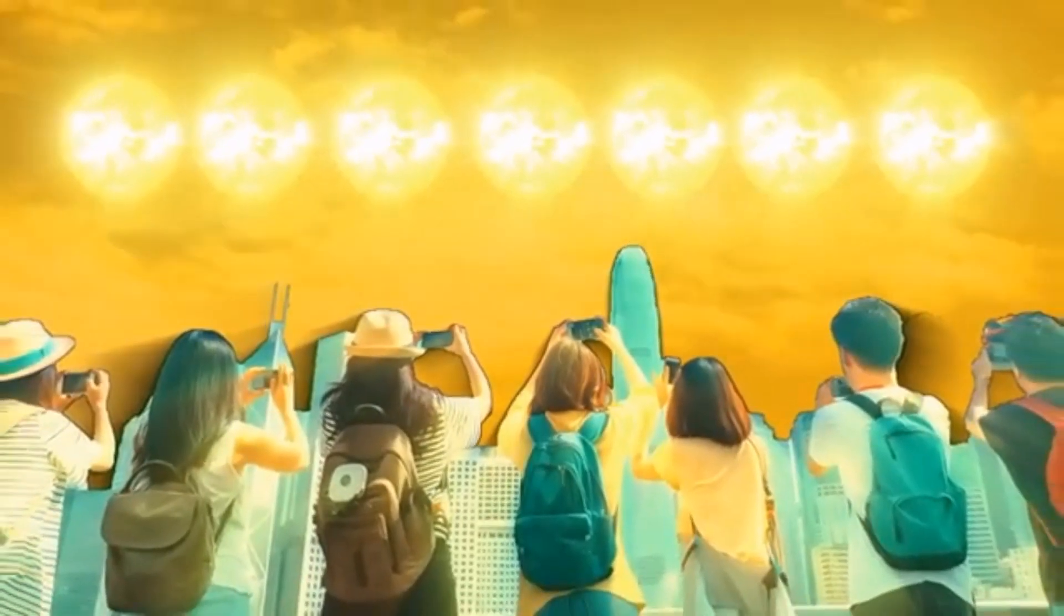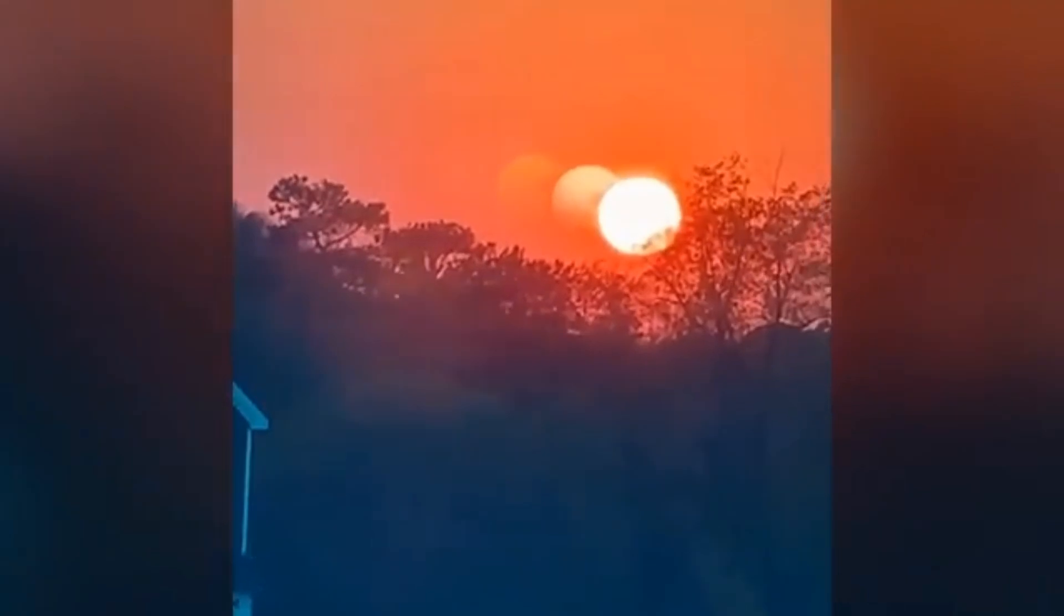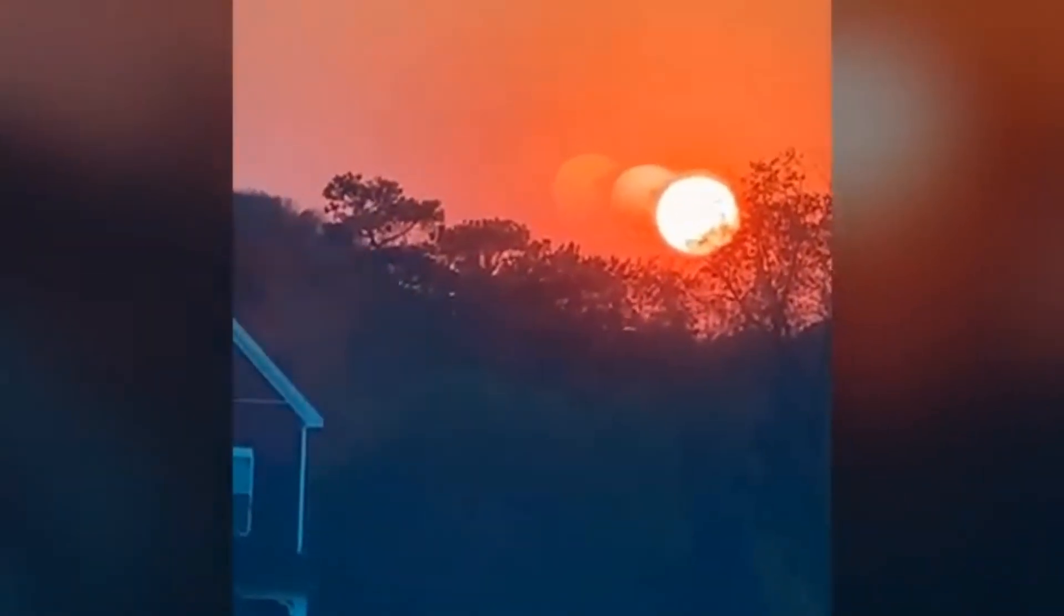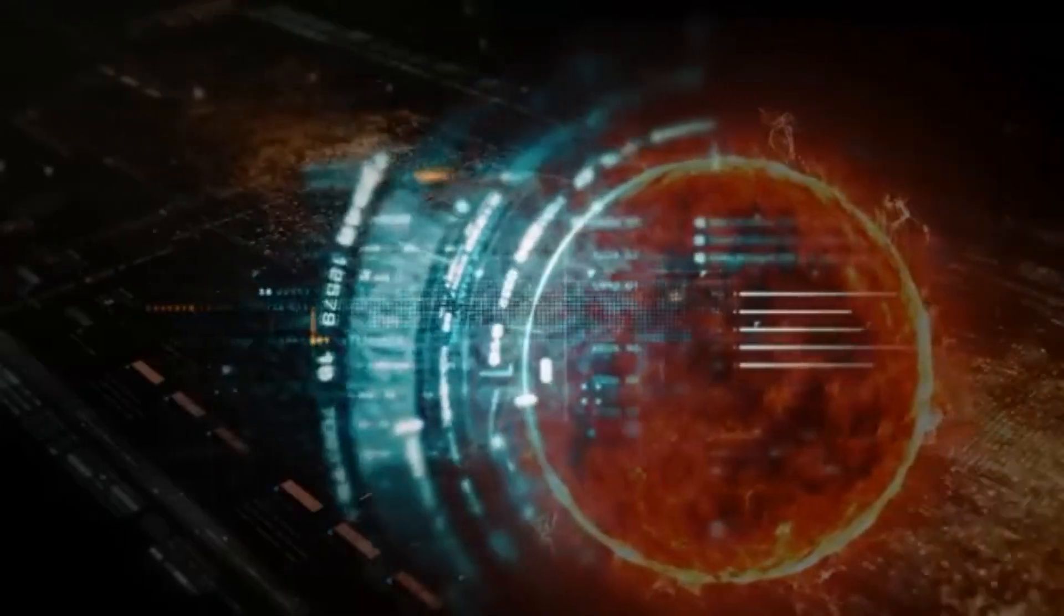This wasn't the first time multiple suns were seen in the sky. There are several videos online showing similar phenomena, like three suns appearing at once. Some people believe this is a glitch in the matrix of the universe, while others offer scientific explanations.